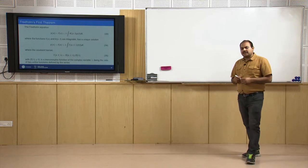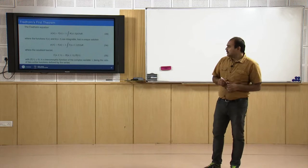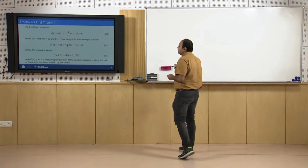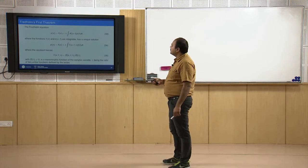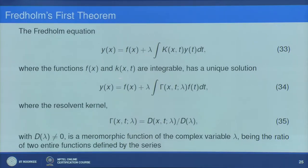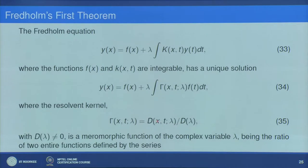This means that lambda is a root of the Fredholm determinant. If you recall from previous classes, the Fredholm equation y(x) = f(x) + λ∫k(x,t)y(t)dt, assuming f(x) and k(x,t) are integrable, has a unique solution y(x) = f(x) + λ∫γ(x,t,λ)f(t)dt, where γ(x,t,λ) is the resolvent kernel, found as the ratio D(x,t,λ)/D(λ).